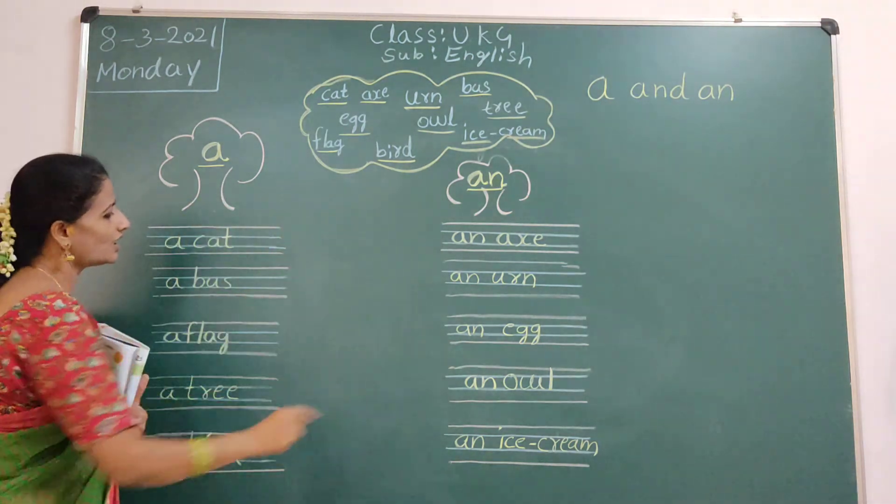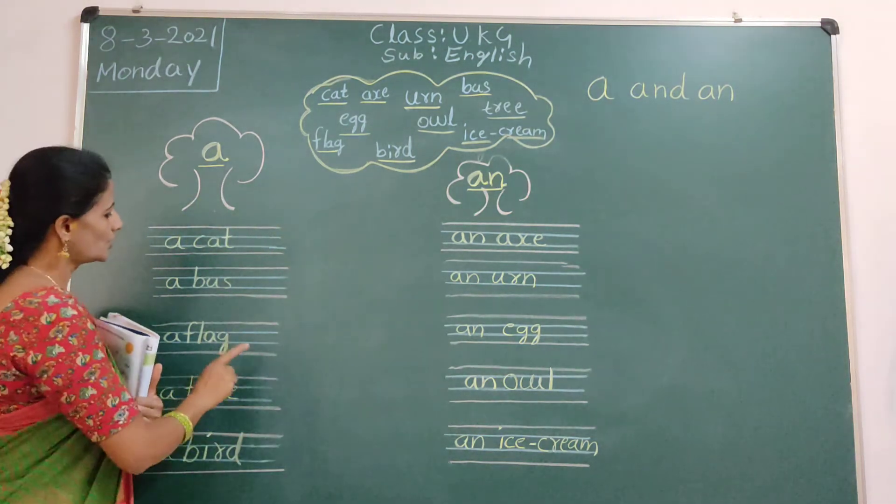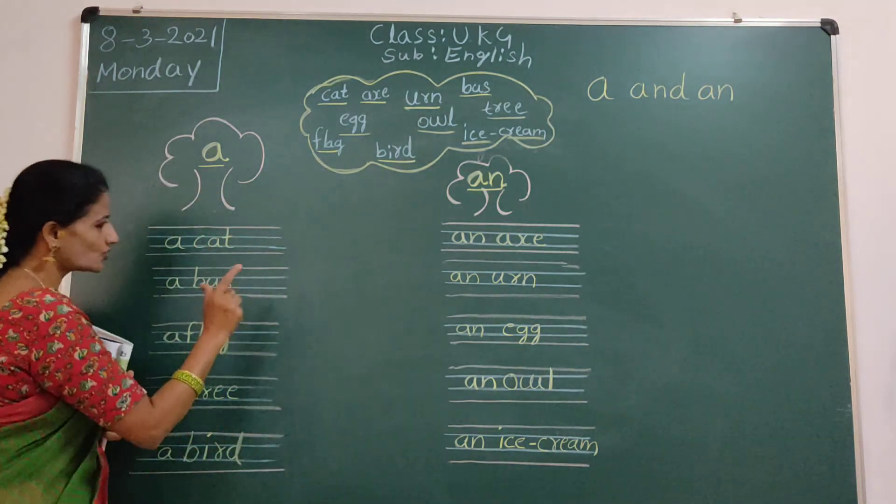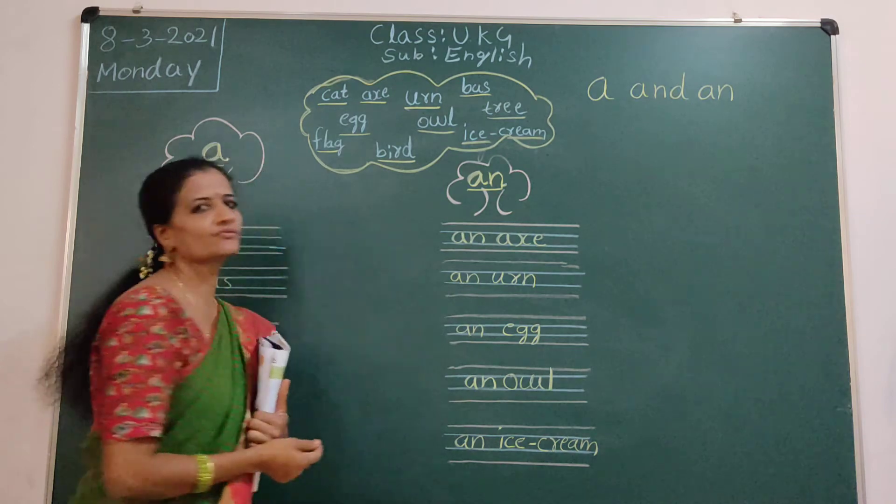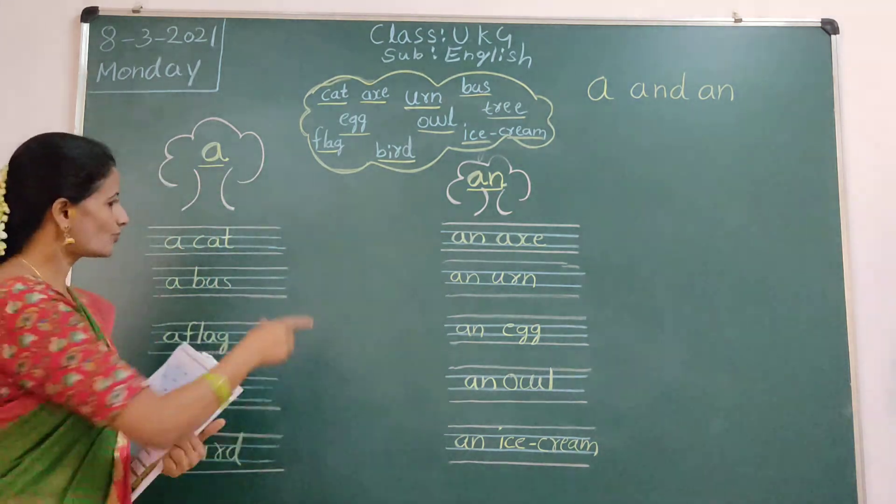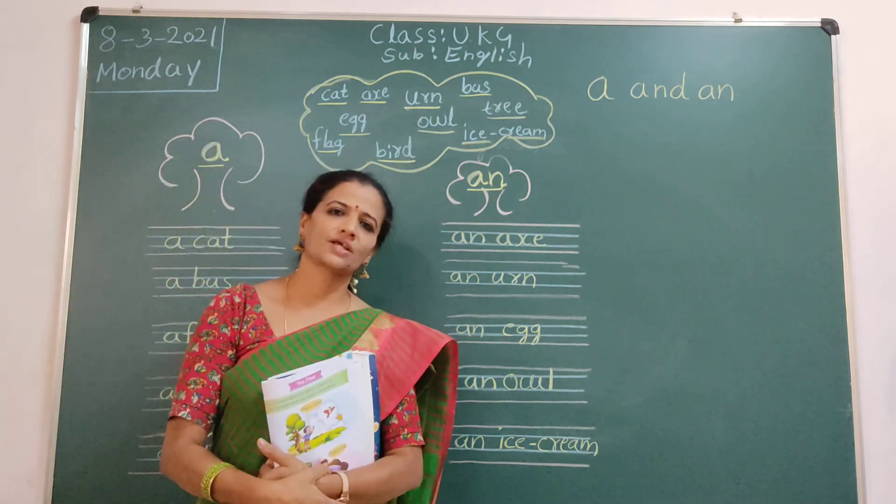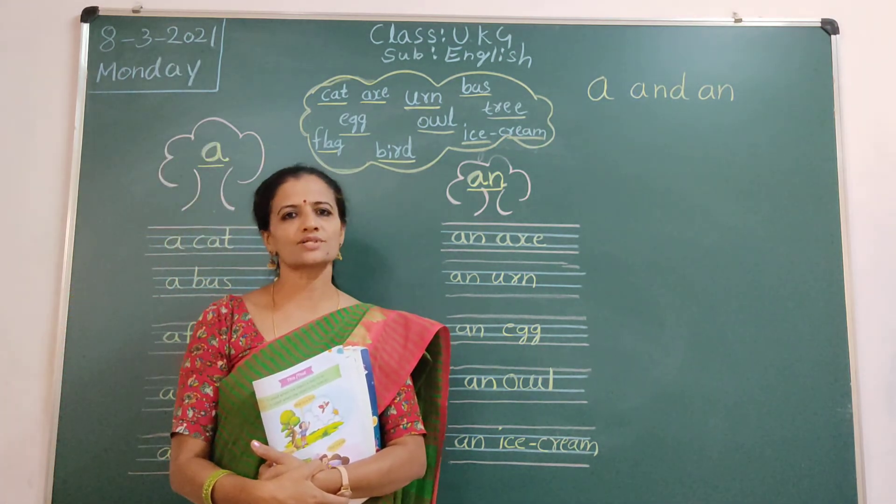So, that's why we will shuffle the word. So, children. Everyone write like this. This side A words. This side An words. Okay children. Copy in the classwork. Okay. See you in the next class. Thank you children.